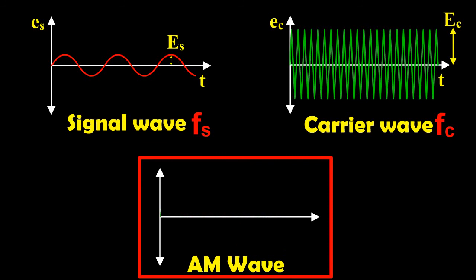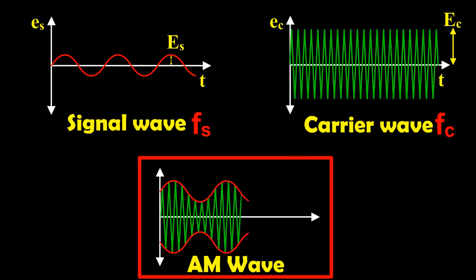The third visual is the amplitude modulated wave. It is to be noted that the amplitudes of both positive and negative half cycles of carrier waves are changed in accordance with the signal. Thus, the amplitude of the modulated wave possesses the frequency of audio signal waves.